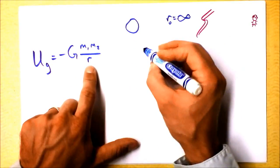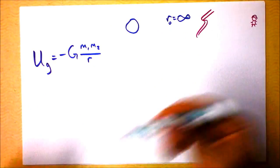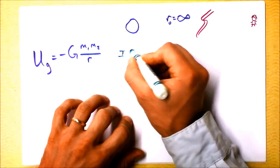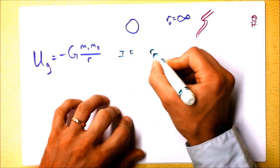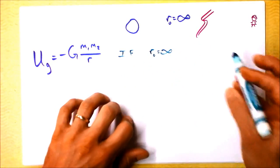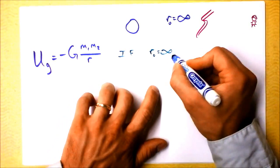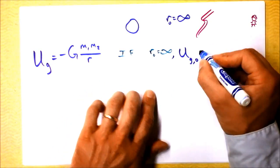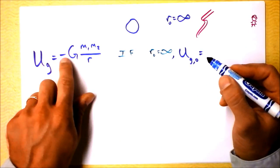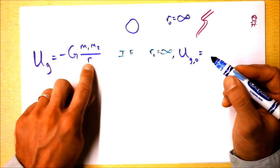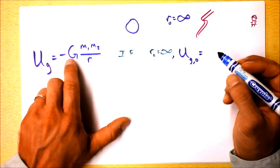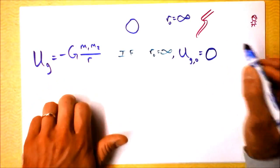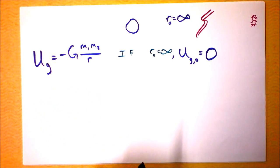If R-naught equals infinity, then U gravitational initially is negative G times M1 times M2 divided by infinity. I don't care how big negative G is - it turns out it's actually really pathetically small. But the initial gravitational potential energy of Newton is zero.